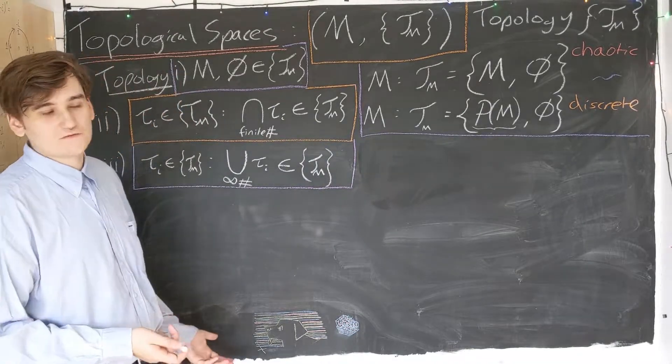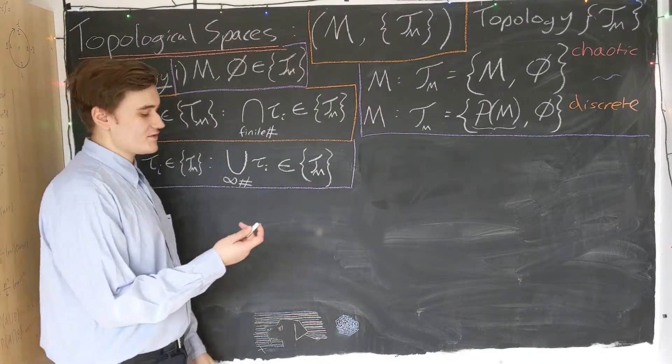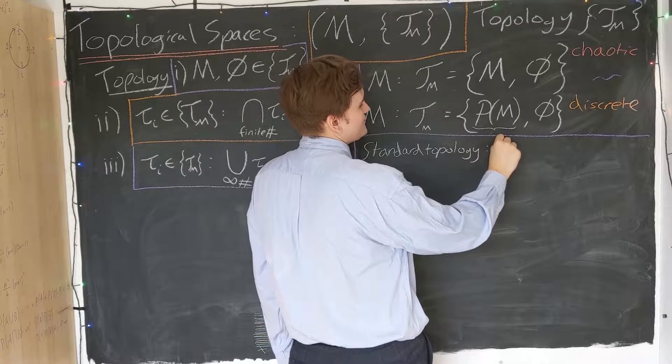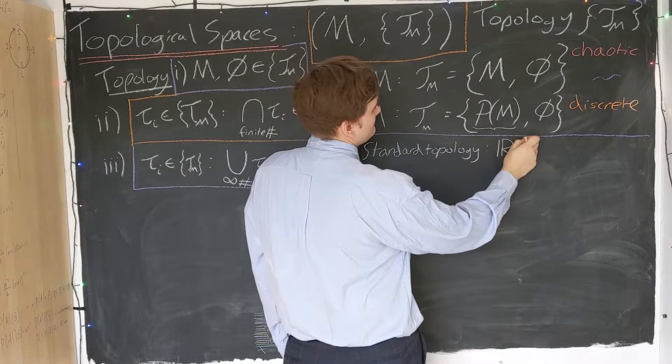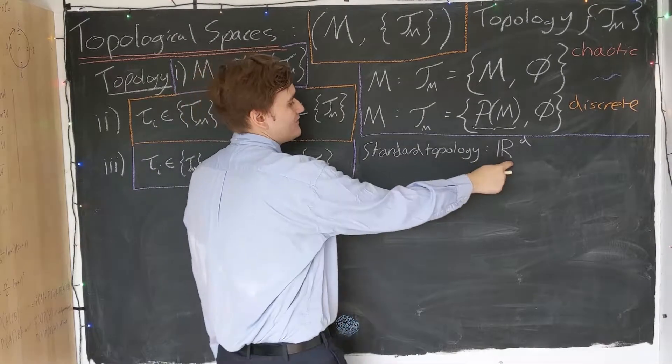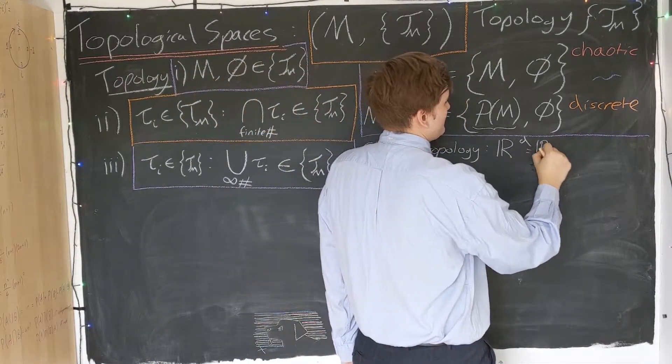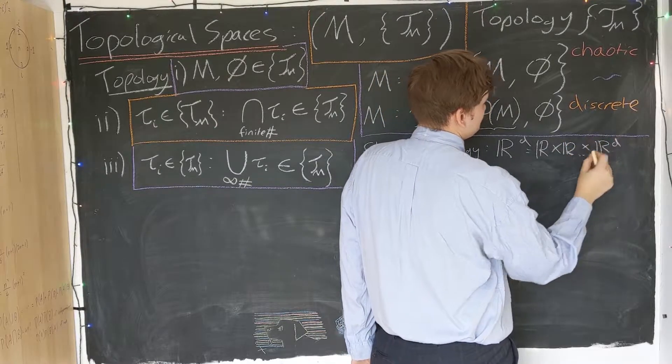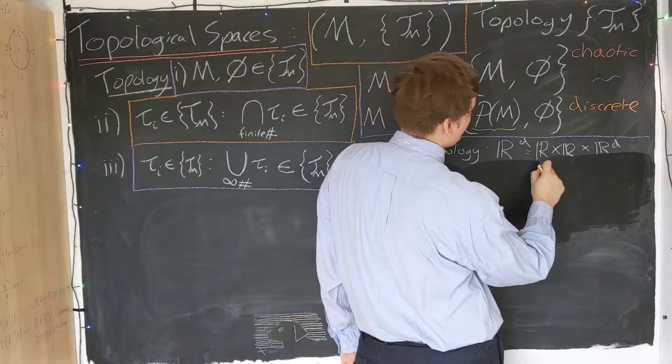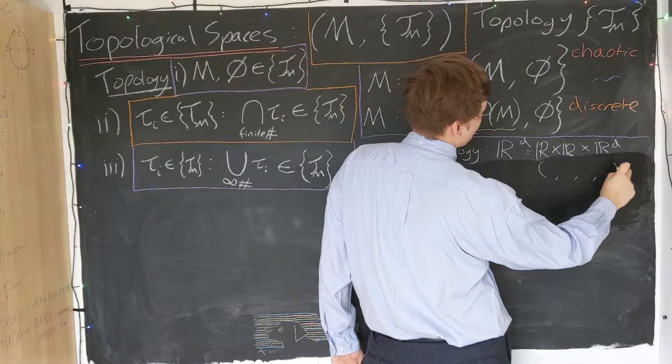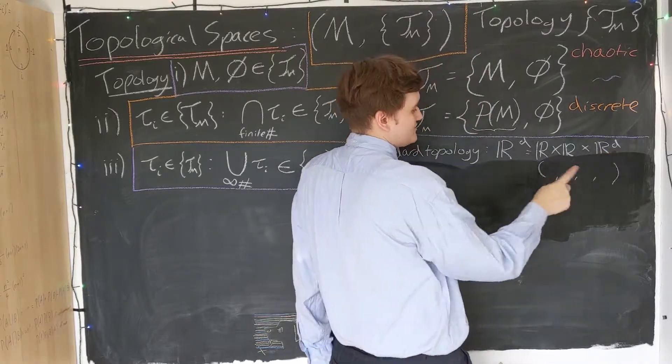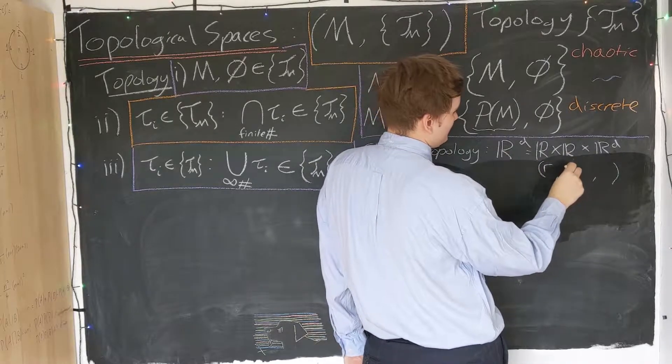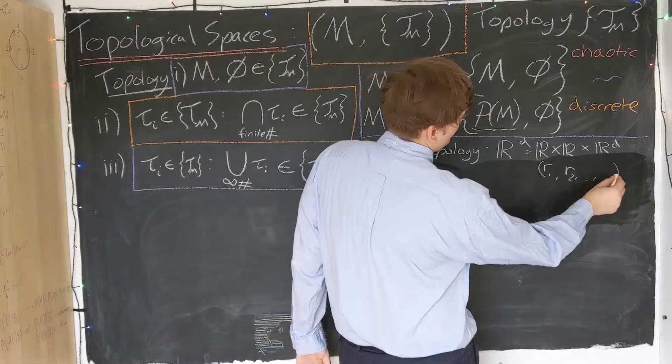So one of the most useful topologies that we're going to need and use is the so-called standard topology. The standard topology on the set of real numbers to some dimensional power. So we understand what this set of real numbers is; it's just the Cartesian product of real lines. So we understand what the elements of this set are—they're just a list of numbers. However many real lines we've taken in the Cartesian product, we'll have that many lists of numbers. And each of these numbers just comes from each real line.